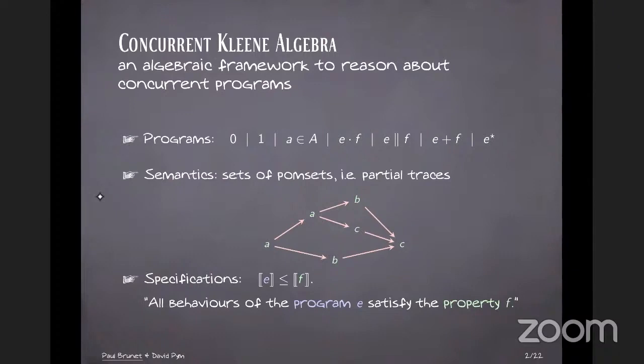Right. So yes, the semantics is given in terms of Pomsets, so you have events, and there's a partial order between the events. So it's a generalization of words which correspond to finite traces of programs. And then if you want to do verification with CKA, the way you can do it is through a program equivalence or program containment. Typically, you're going to use statements like a program is smaller than a property, meaning every behavior of the program is contained in the set of legal behaviors as specified by the property.